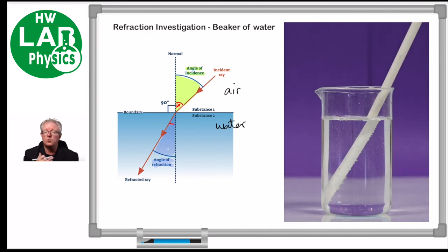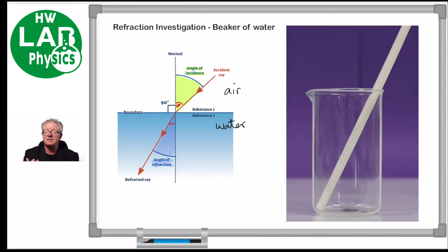When we get rid of all the bubbles, we can make sure that it's nice and clear to see. You can see that the rod looks like it's bending and it looks like it's a little bit magnified. That, of course, is due to refraction.